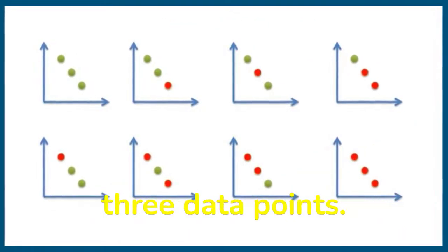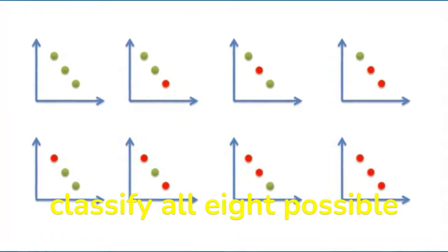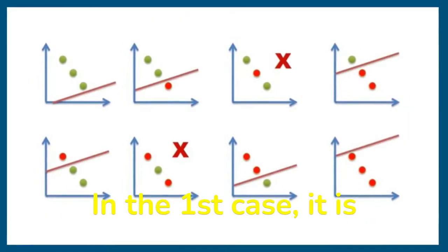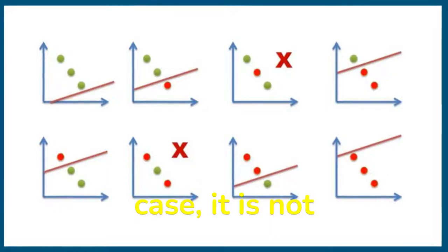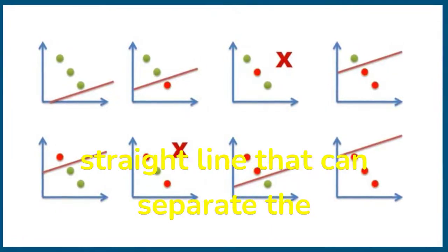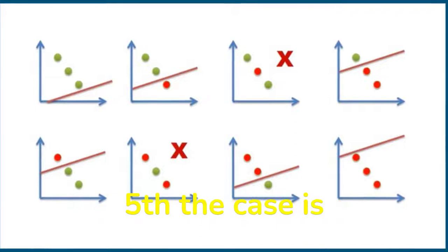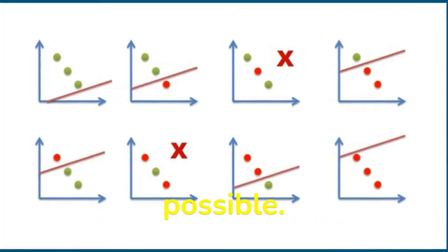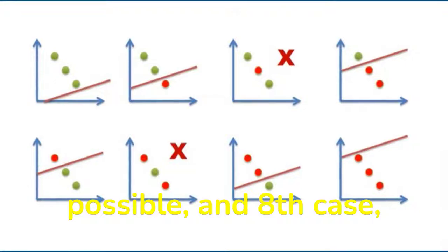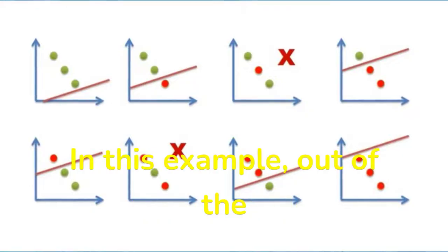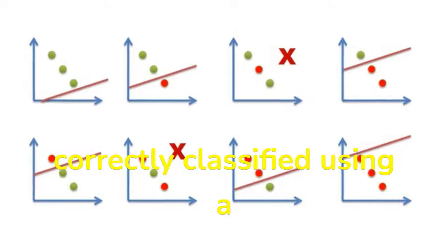Now consider the case of three data points. Check whether a straight line can correctly classify all eight possible combinations. In the first case it is possible. Second case it is possible. In the third case it is not possible, because we cannot find a straight line that can separate the two classes correctly. In the fourth case it is possible. Fifth case is possible. Sixth case is again not possible. Seventh and eighth cases are possible. So out of the eight possible ways, two cases cannot be correctly classified using a straight line.